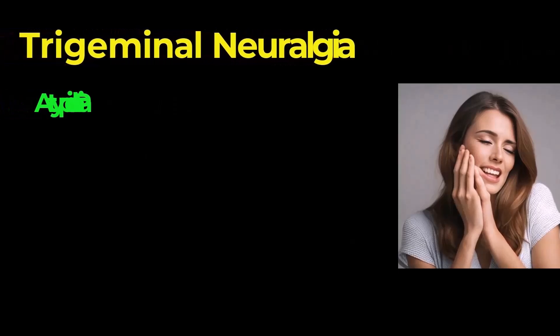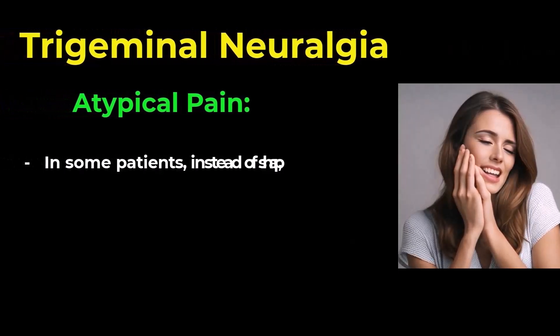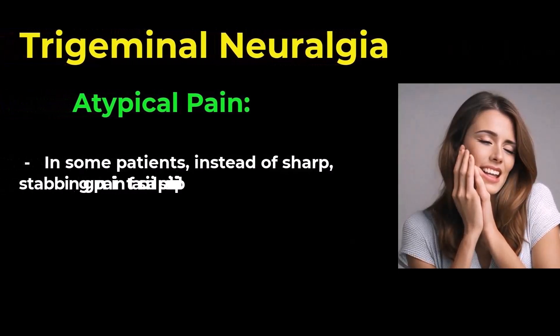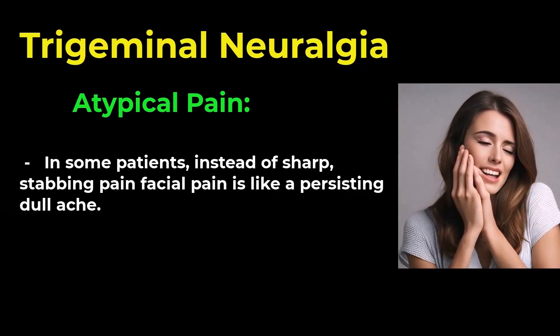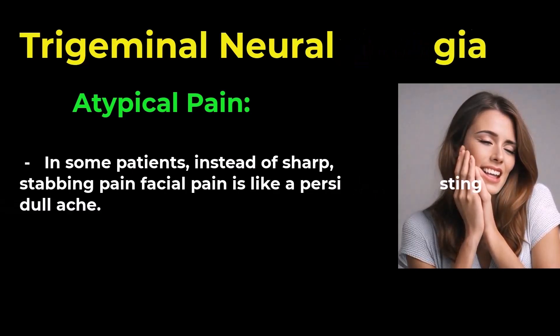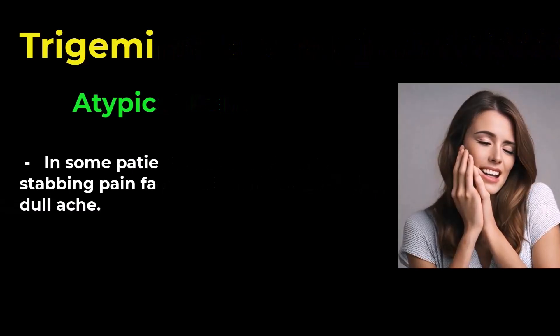There is a condition known as atypical trigeminal neuralgia. In this condition, instead of sharp stabbing pain, the facial pain the patient experiences is like a persisting dull ache. There are of course several other versions which are also classified as atypical trigeminal neuralgia.